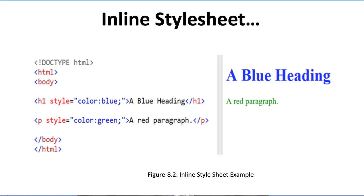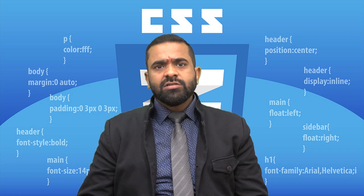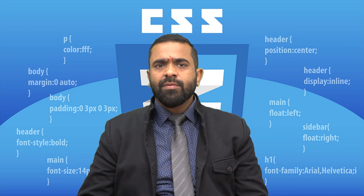In the inline style sheet example, figure 8.2, we have a blue heading in the output and the red paragraph. So 'blue heading' itself is displayed in blue, and 'a red paragraph' is the paragraph text, which we have changed to green color. We have set property examples using the style attribute of an HTML element.